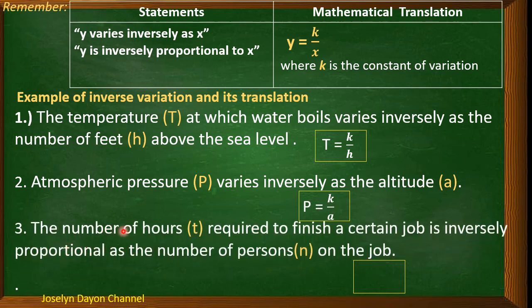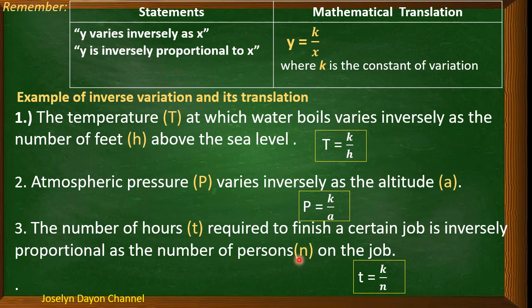Third: the number of hours t required to finish a certain job is inversely proportional to the number of people. So t is the number of hours, k is the constant on the numerator, and the number of persons on the job is in the denominator, giving t = k/n.